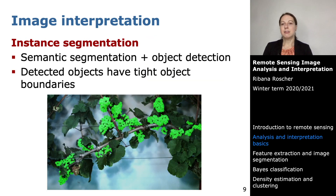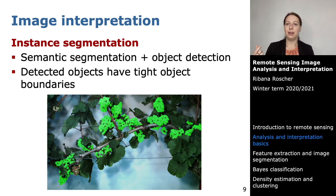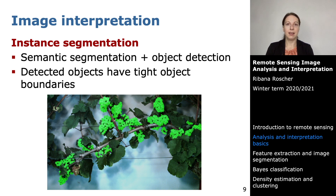Another interpretation task that is quite hyped recently is instance segmentation, which is the combination of object detection and semantic segmentation. Here you detect single objects like grapevine berries and also have a tight object boundary — not only a bounding box but also the semantic segment. This allows you to indicate individual berries even when they are clustered together.